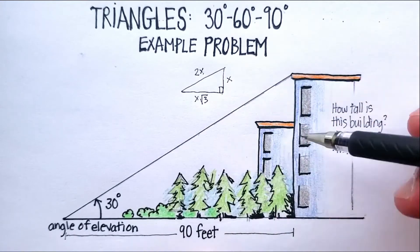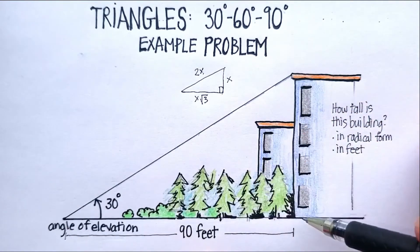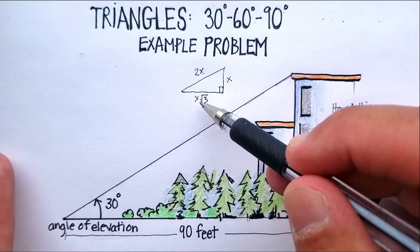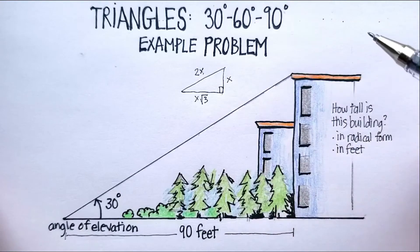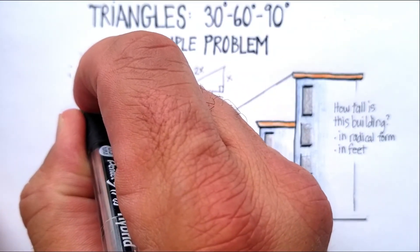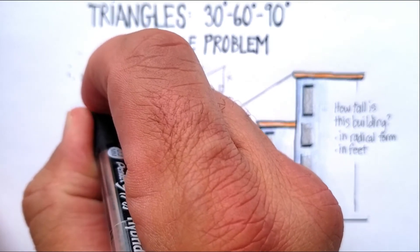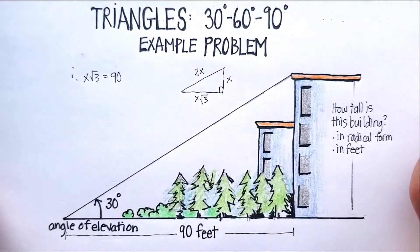Now what do we know here? We know that the distance between here and here is 90 feet. In other words, 90 feet should be equal to the x times √3. So let's start filling in our information. x√3 should be equal to 90 feet.